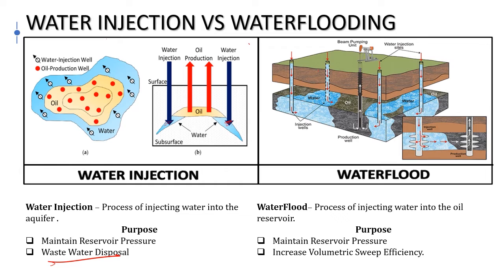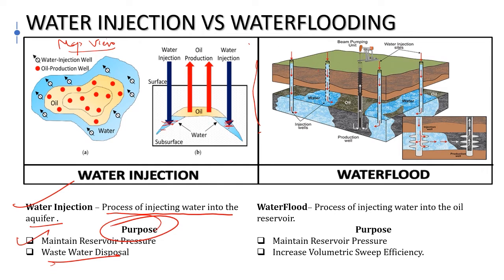Water injection is the process of injecting water into the aquifer. Injector wells inject water into the aquifer part. In the map view, water injection wells are in the aquifer part. Red dots represent producers. The main purposes of water injection are maintaining reservoir pressure and waste water disposal — compensating the volume produced by injecting water back into the reservoir to maintain reservoir pressure.